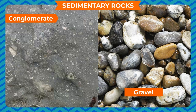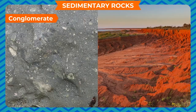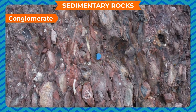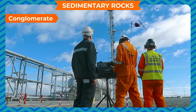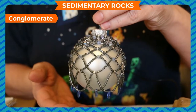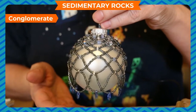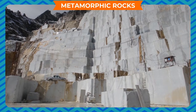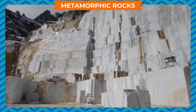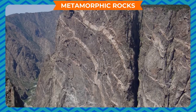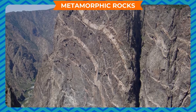Conglomerate is formed when pebbles, gravel, and stones are cemented together by minerals. It is found in gray and orange color shades. It is a rough and hard rock, mainly used in the construction field, and can be polished to make ornaments.